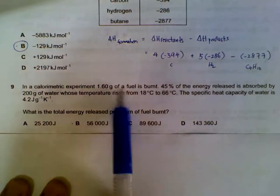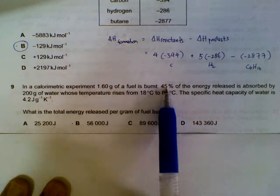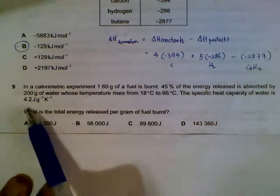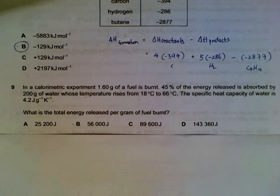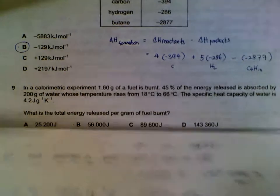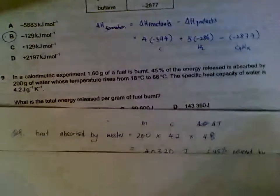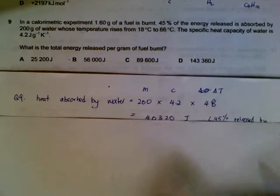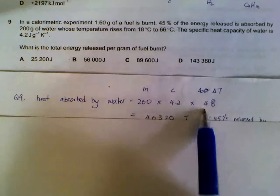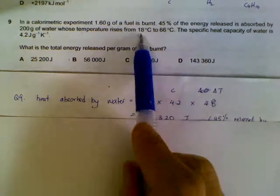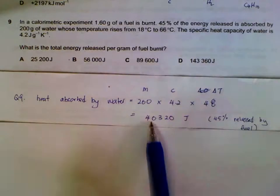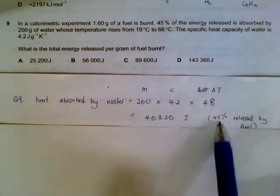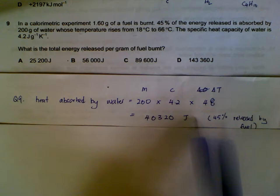Number nine. We have a fuel burned, and part of the energy, 45%, is absorbed by 200 grams of water. That is the temperature rise, and they give you specific heat capacity. First, we have to find out the heat absorbed by the water. Mass of water multiplied by specific heat capacity multiplied by the temperature rise, 66 minus 18. So this is the energy in joules absorbed by the water. This energy is actually only 45% of whatever was released by the fuel.